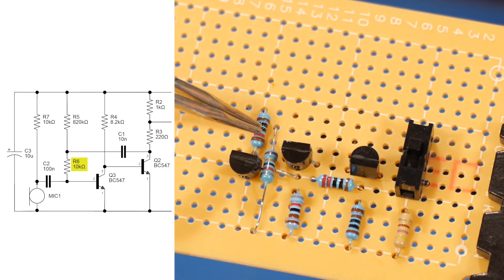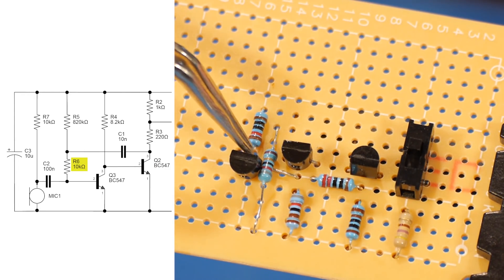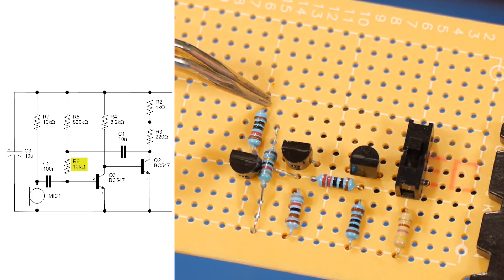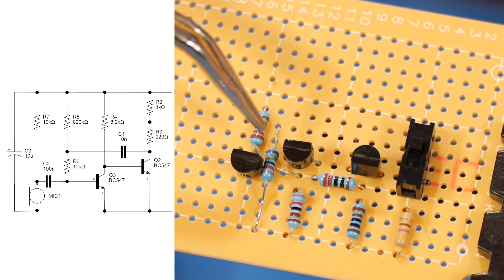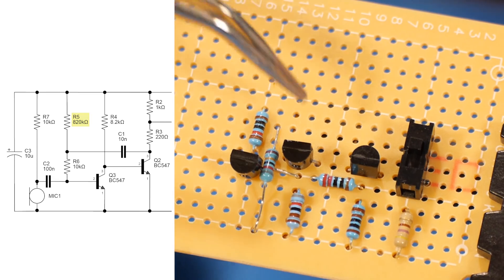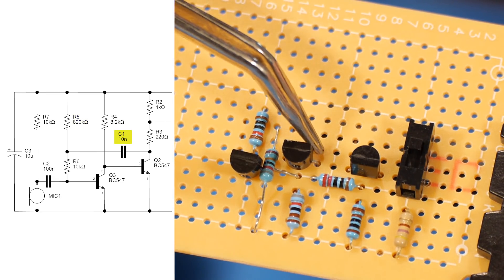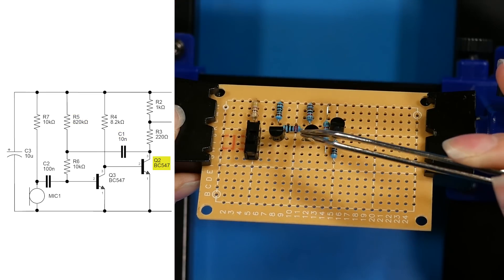Now I've placed R6, which needs to connect to the base pin two of Q3. Now the other side of that needs to connect to R5, as well as a capacitor that is going to have to also connect to the collector of Q2.